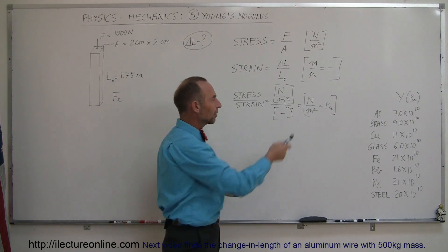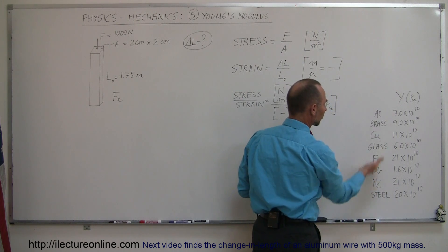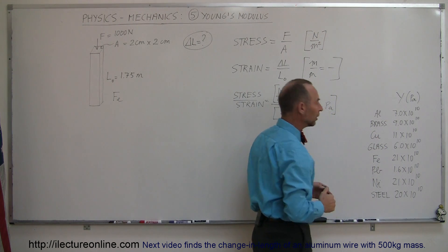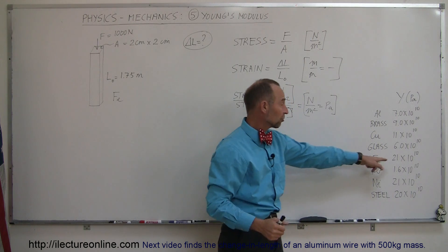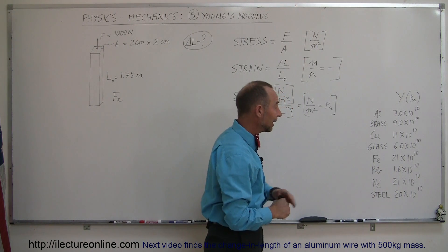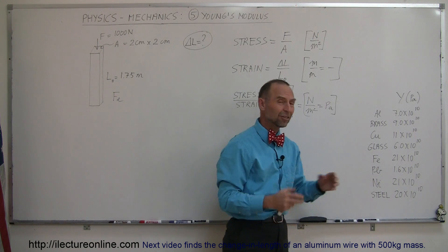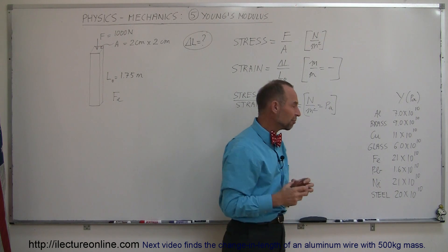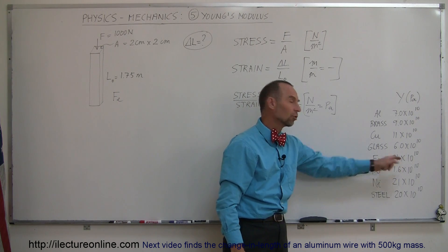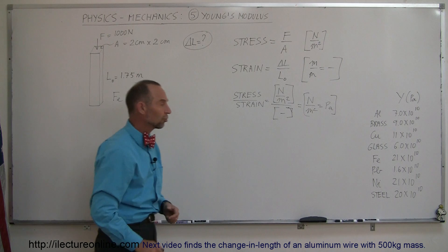Just for reference, here are some Young's moduli values for various materials: aluminum, brass, copper, glass, and so forth. Notice iron is a fairly strong material with a very high Young's modulus. Then something like lead, which most of us have experienced — lead tends to be a very soft metal. We can deform it much more easily, and its Young's modulus is much, much smaller than that of iron, nickel, or steel.